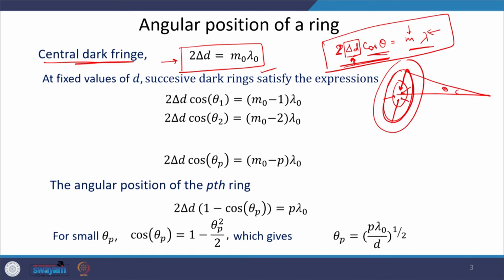We had two mirrors and slowly reduced the separation, then merged them. Another possibility is to keep rotating the micrometer screw attached to mirror M2, so that the image of M1 travels to the opposite side and the air gap opens again in the opposite direction. As δd increases, new fringes from the centre start to appear.